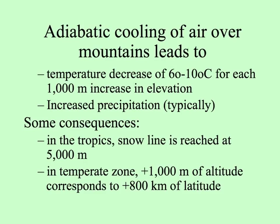Typically, the higher in elevation, the moister and wetter it is. Mountains in the tropics are effectively higher — the snow line is reached at 5,000 meters instead of lower as in temperate zones. A 1,000-meter increase in altitude corresponds to about an 800-kilometer difference in latitude. So vegetation you would find in a cold temperate location you might find on a higher mountain in the tropics.